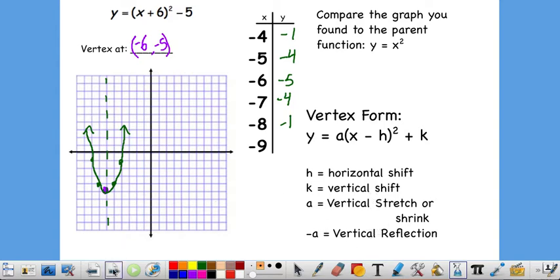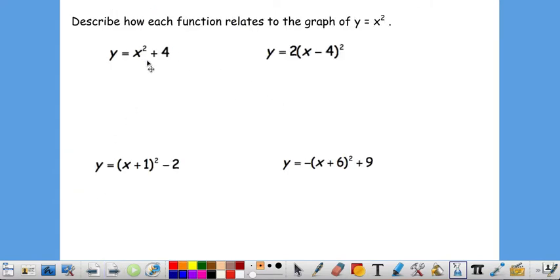So let's practice with that idea a little bit. How would this graph compare to our parent function, y equals x squared? Well, the only shift happening is we're going up 4. So we'd say shift up 4.